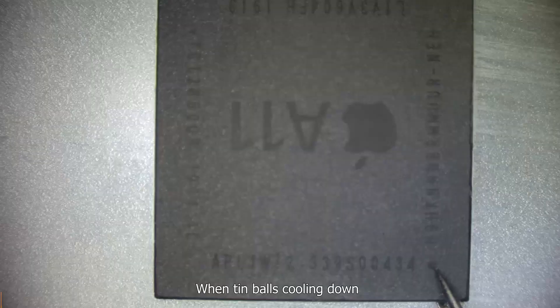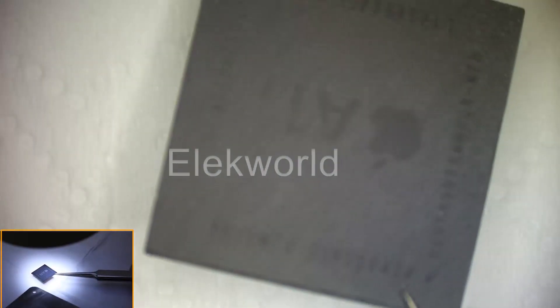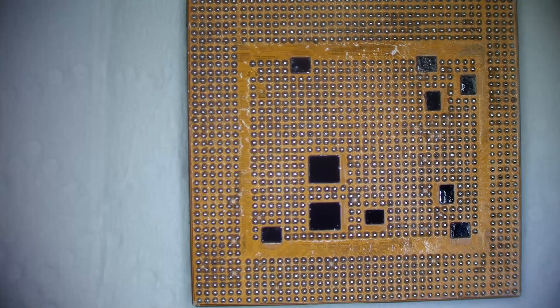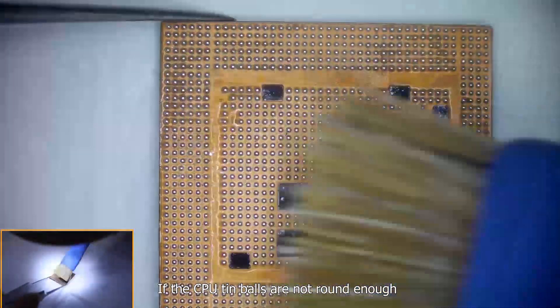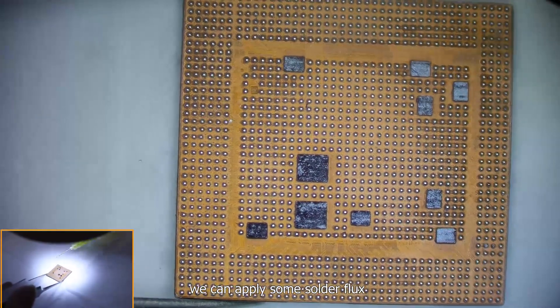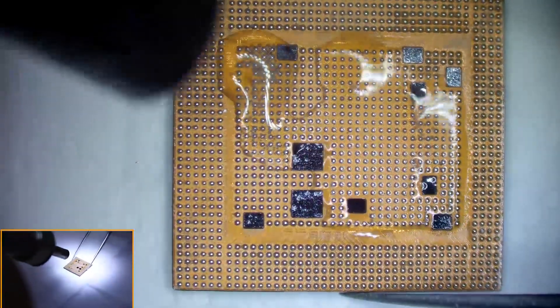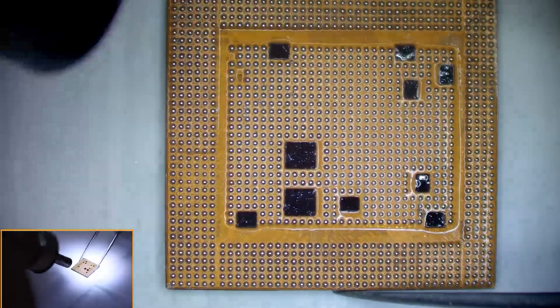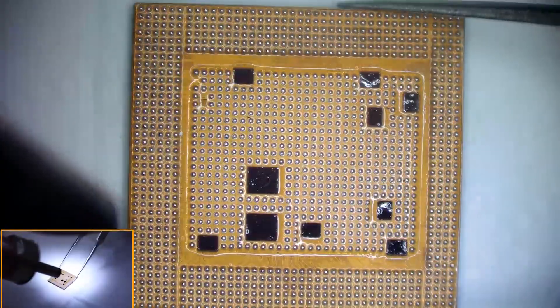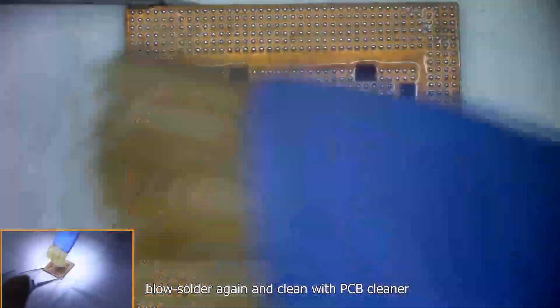When tin balls cool down, we can take off CPU from stencils. If the CPU tin balls are not round enough, we can apply some solder flux, blow solder again, and clean with PCB cleaner.